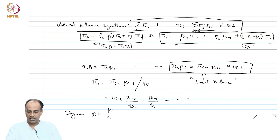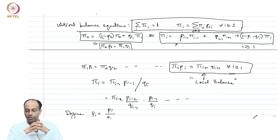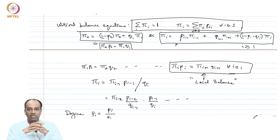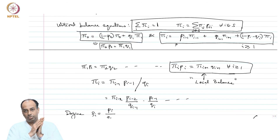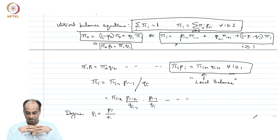These are called global balance equations, and as opposed to that, local balance means that between any two pairs of states, the flow matches in either direction. We will see that whenever this kind of local balance equation is satisfied between any two pairs of states, such a process has a reversibility property — it will have statistically indistinguishable properties when run forward or backward in time. Birth-death Markov chains are reversible Markov chains, which we will study next.